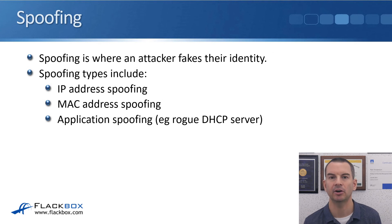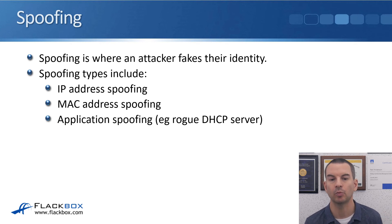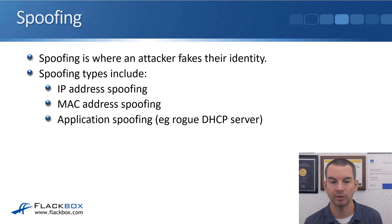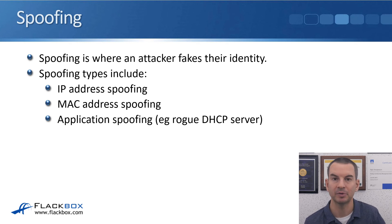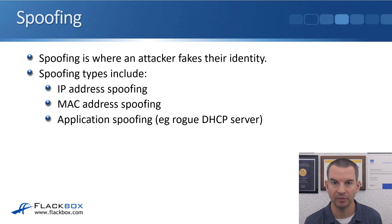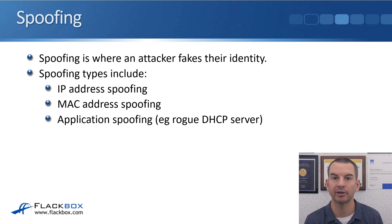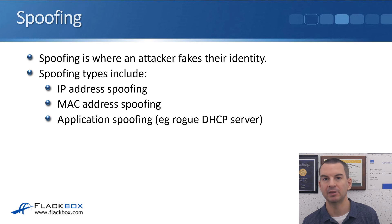Spoofing is where an attacker fakes their identity. Spoofing types include IP address spoofing, where the attacker spoofs their source IP address pretending to be somebody else; MAC address spoofing, for example ARP attacks covered earlier in the switch security section; and application spoofing, for example a rogue DHCP server inserted into your organization pretending to be the legitimate DHCP server.